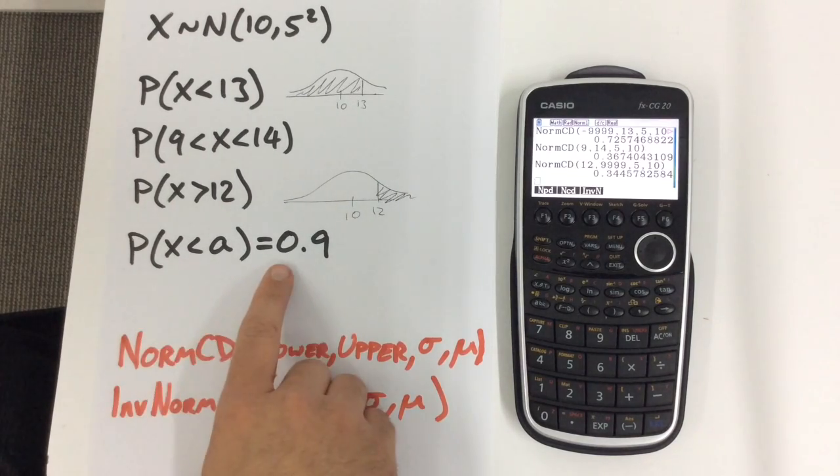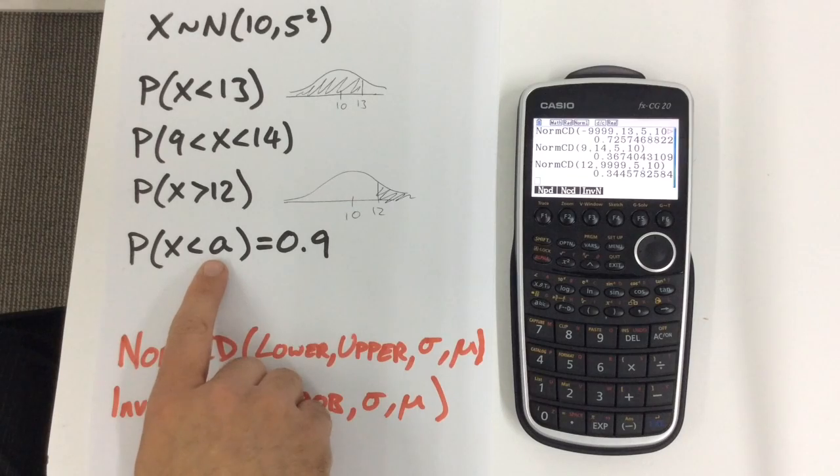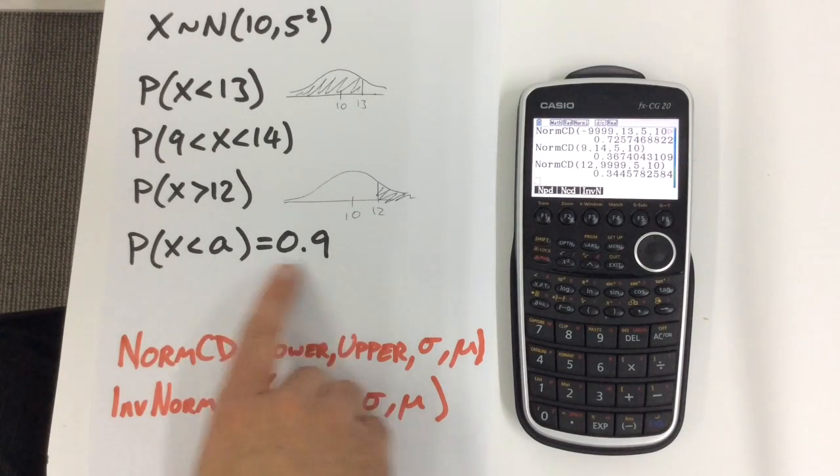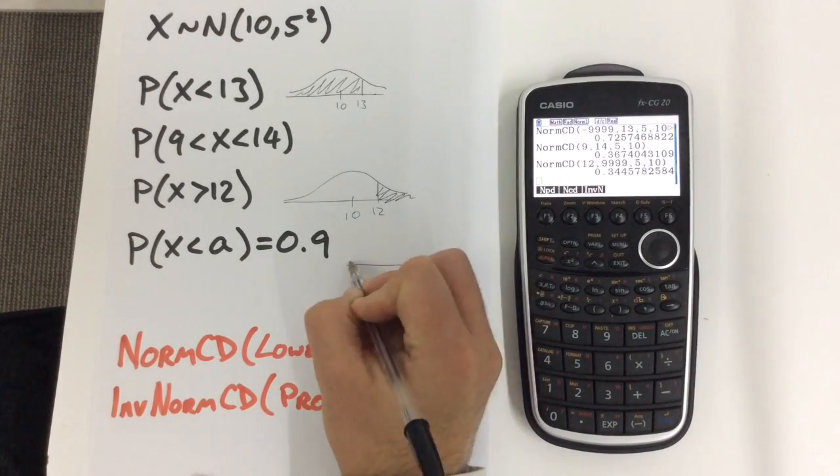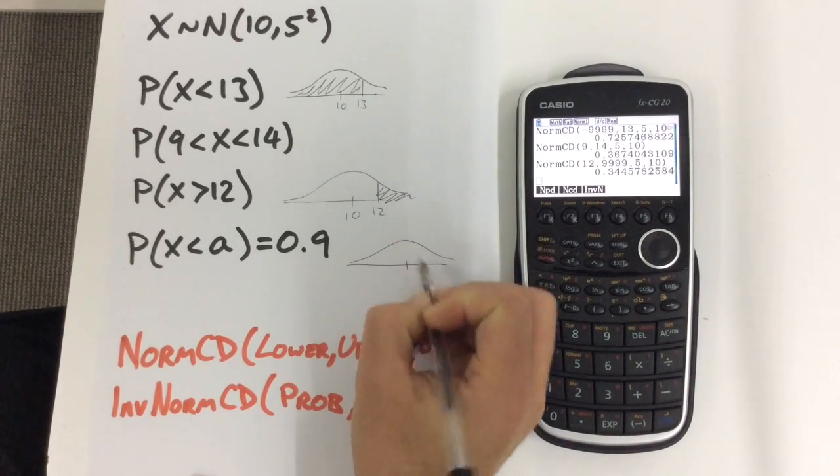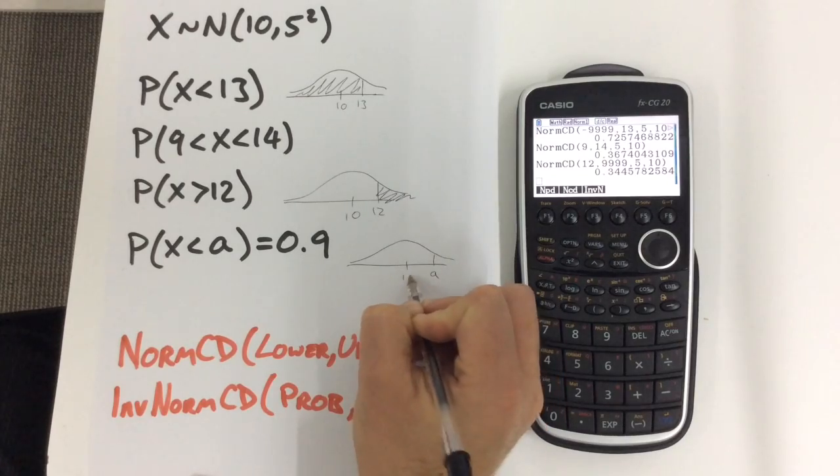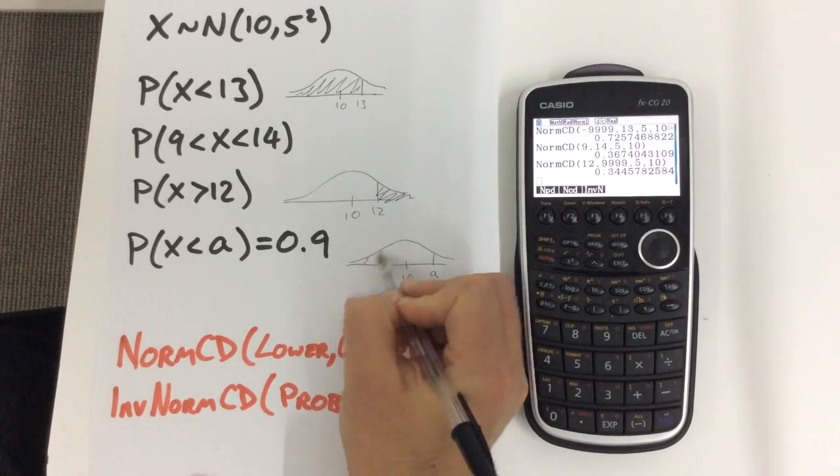For this last question we're looking for a value A such that the probability of being less than this value is 0.9. Of course what that translates to in a normal distribution graph is some value A so that this area is equal to 0.9.